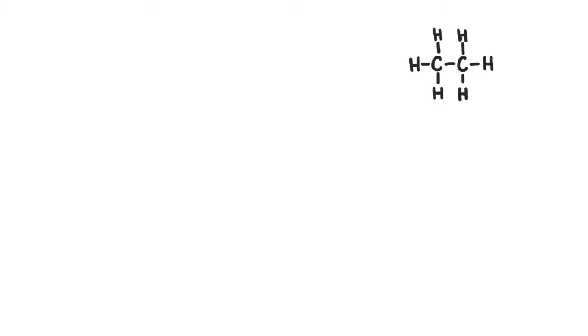In ethane, each hydrogen is attached to one other carbon and three other hydrogen atoms. So the electron shielding between all six hydrogens would be equivalent. They are said to be chemically equivalent.